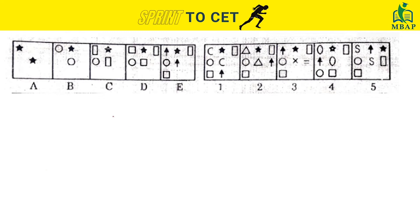Let's look at this one. We can see this is a series-based question. Two elements introduced in the first figure get converted into one in the next. The same thing is happening throughout: two circles become one, two rectangles become one, two squares become one. So in the next figure, two arrows should become one. Also, a new element was being introduced every time — star, circle, then rectangle, then square — so these four elements should appear in the next series.